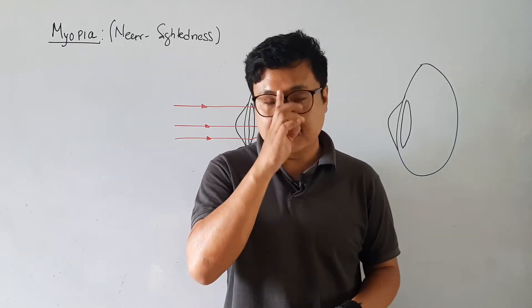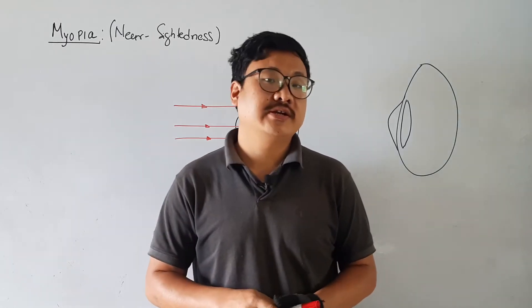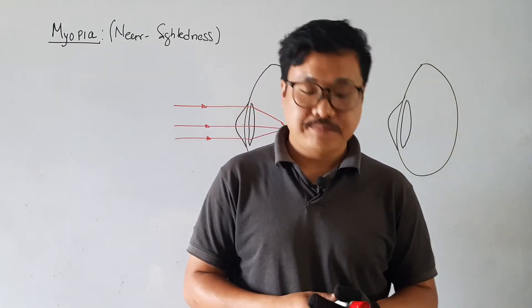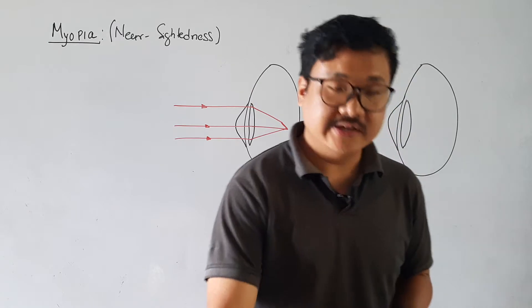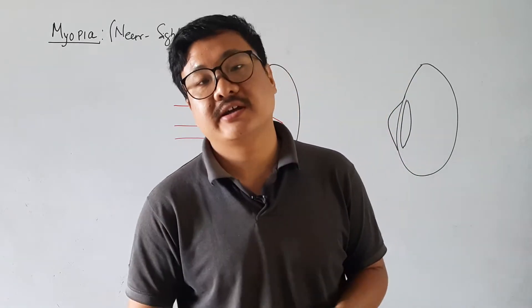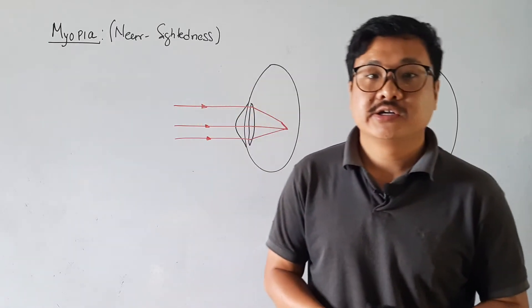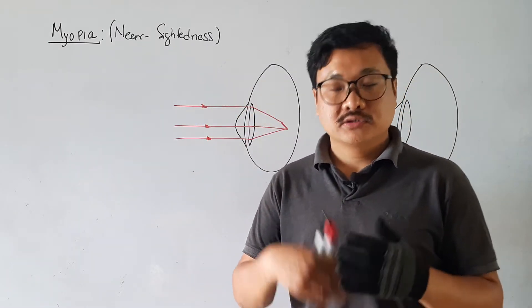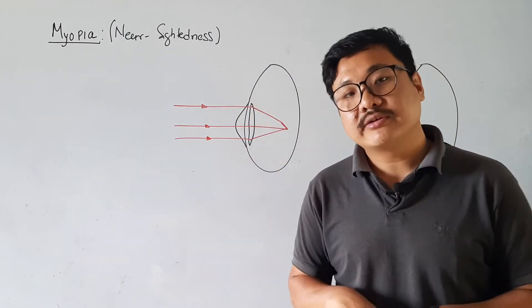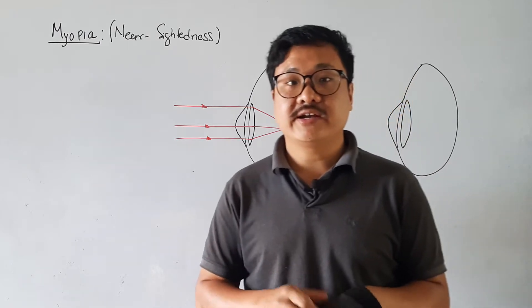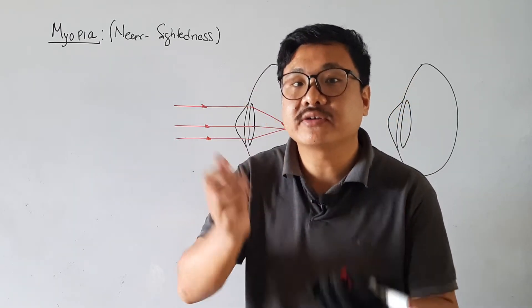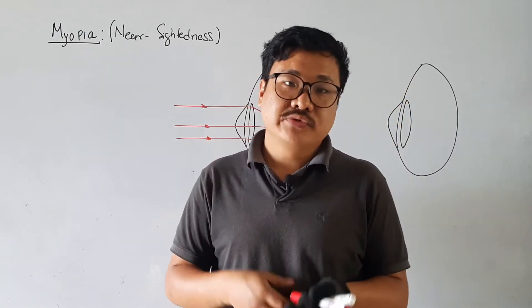Dear students, in the last topic we studied about the power of accommodation, near point, and far point. Today's topic is myopia. Myopia comes under the defects of vision.